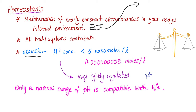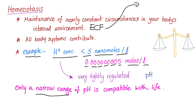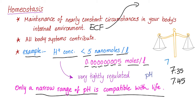As an example, you have the hydrogen ion concentration. Usually they should be less than 5 nanomoles per liter — that's 0.0000000005 moles per liter. A very tiny amount, but it's tightly regulated. In fact, only a narrow range of pH is compatible with life. Usually the pH is between 7.35 and 7.45. Theoretically, you can live between 7 and 7.7 pH — anything less than that or more than that, you're dead.